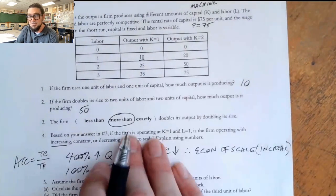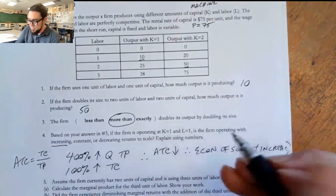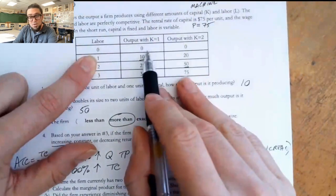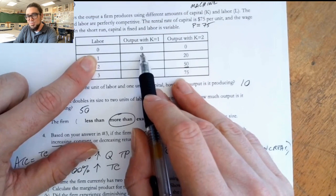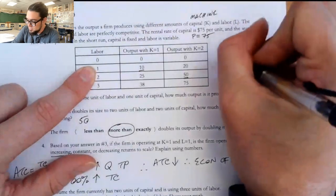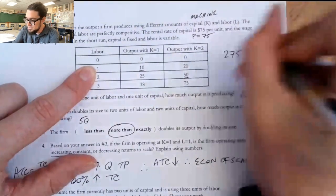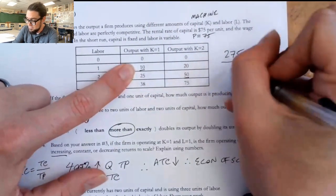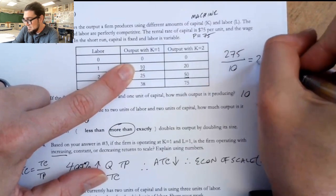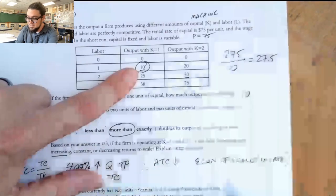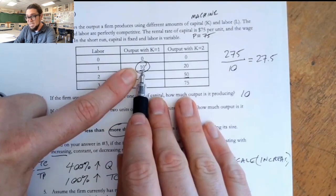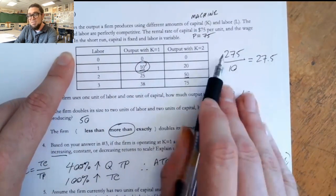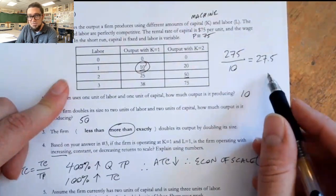So there's two ways we can do this. We can observe that relationship that ATC is total cost over total product. And so ATC therefore is decreasing. Therefore we are in the economies of scale or increasing returns to scale. You can also do it with the actual prices. So the before would be one worker and one machine. One worker and one machine would cost us $275. That's our cost. And then we're producing 10 units. So the ATC is $27.50. And how I got that was the worker was $200, the machine was $75. That's the total cost divided by the total product, $27.50.